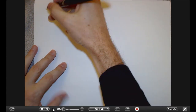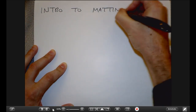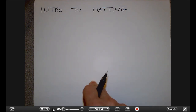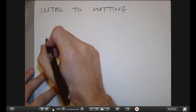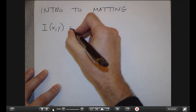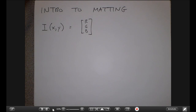This is the intro to matting. I'll also scan these slides as a PDF and put them on the Piazza page. Basically, we have an image made up of pixels, and each pixel is a vector of red, green, blue values. In image editing programs like Photoshop, as you run your mouse over the image you see red, green, blue values that usually range between zero and 255 for typical digital images.